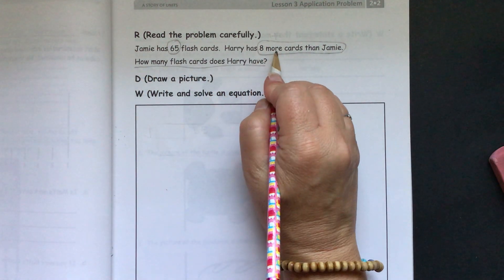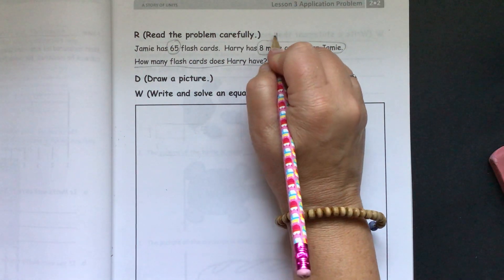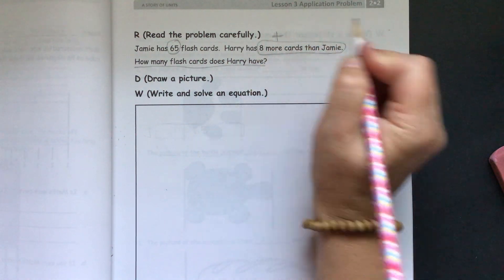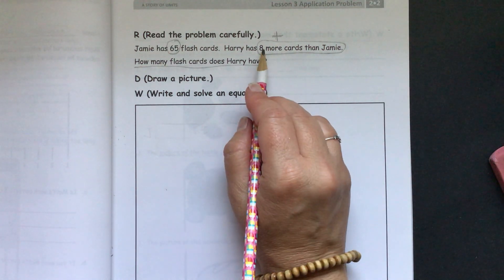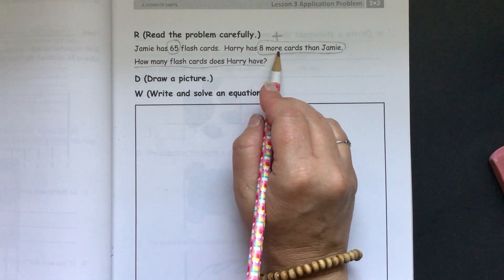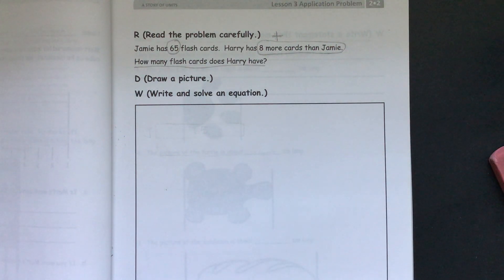So we see 8 more. More is going to tell us to add. He doesn't just have 8 cards, he has 8 more cards than Jamie.